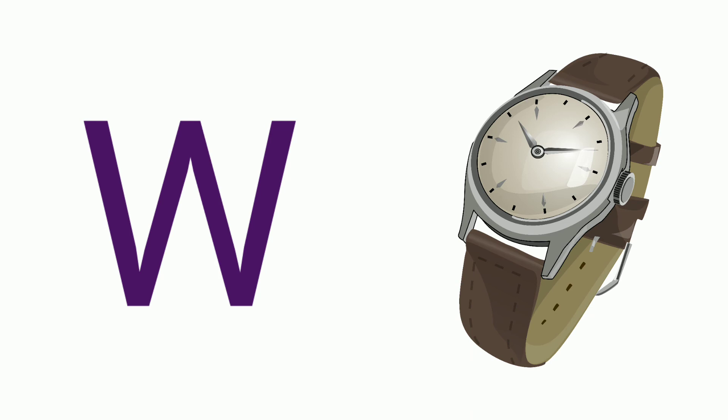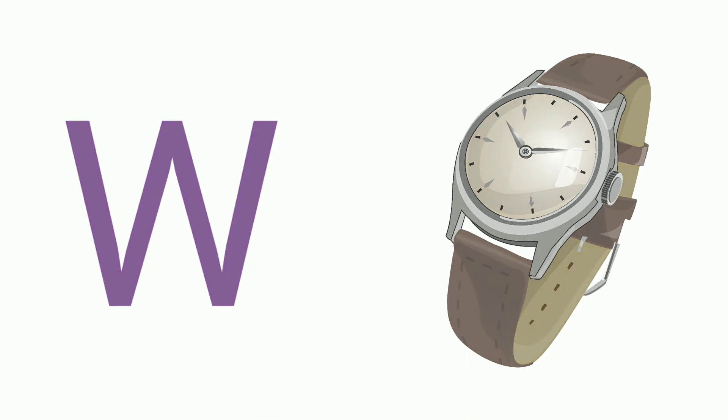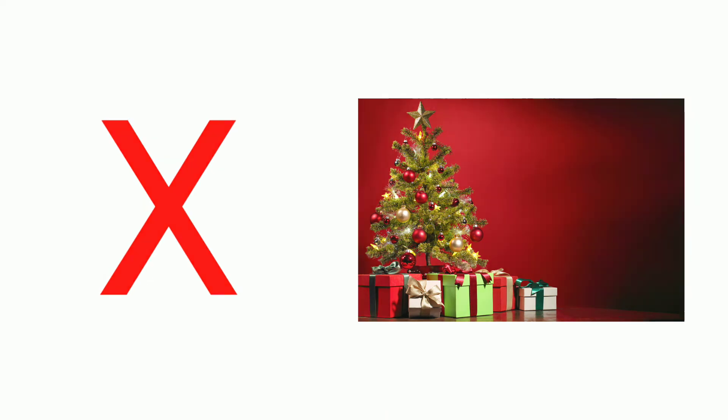W. W for woj. Woj means gadi. X. X for X-Men's tree. X-Men's tree means X-Men's tree.